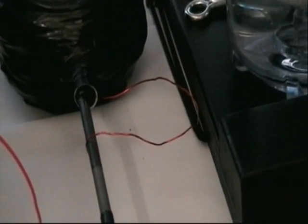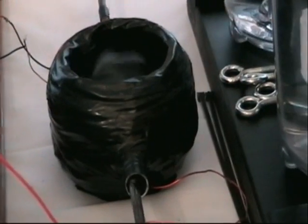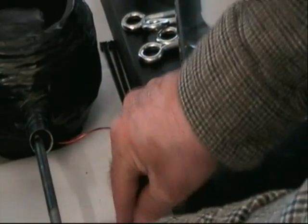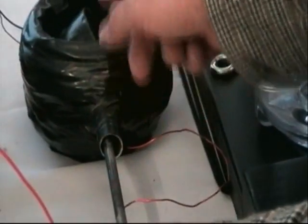I call this a flower pot motor because it was made with a four-inch flower pot and some cheap magnets that are in the center there. Let me stop it again and I'll show you. These are two cheap magnets that have been attached to this shaft here.